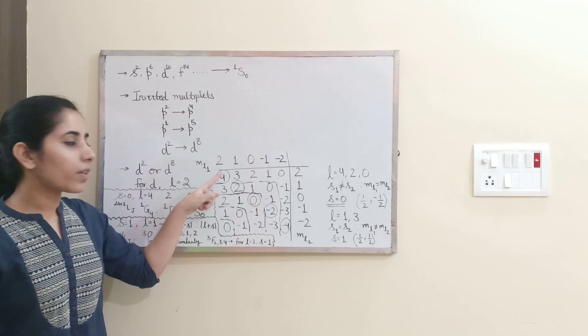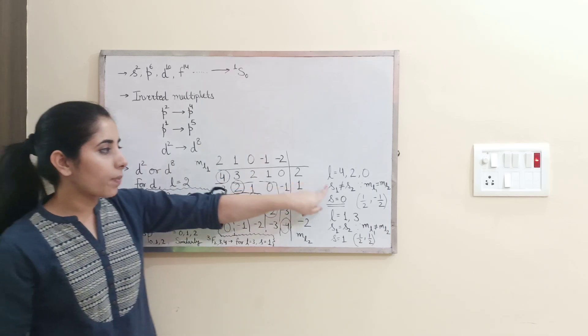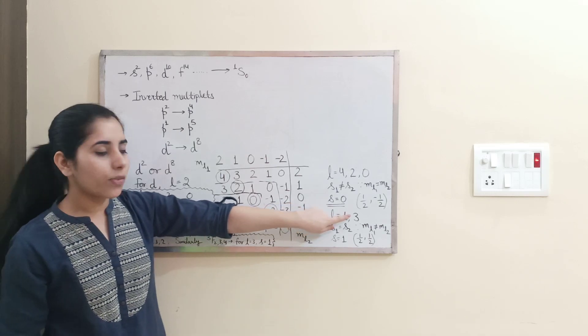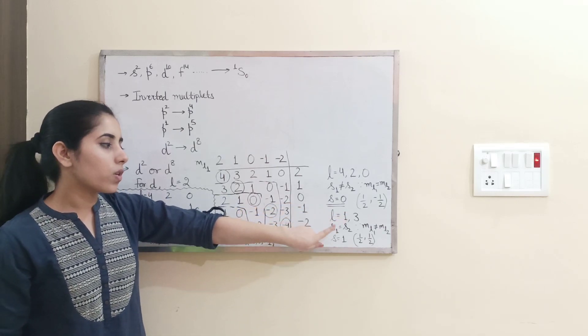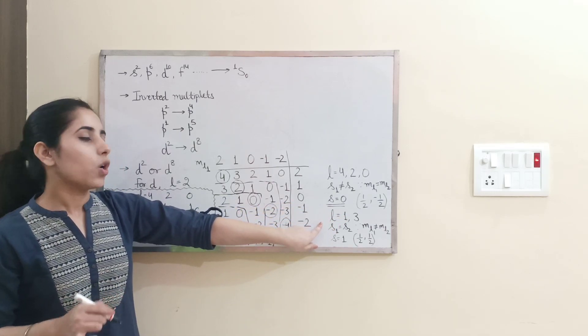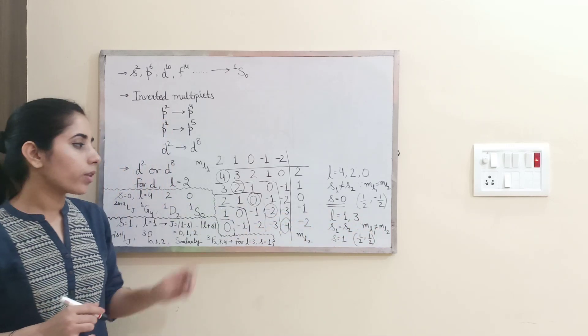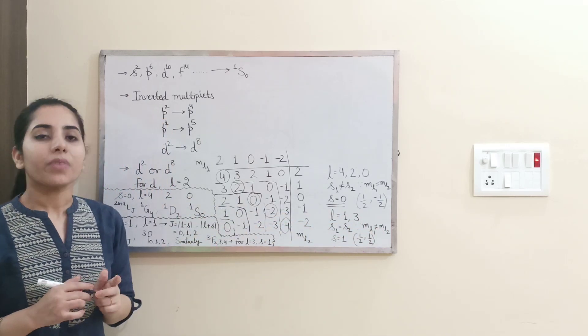So you have already found that for 4, 2, 0, it's going to be spin 0, clear? For remaining ones, that means 1 and 3, spin will be 1 because spin values can be same, okay? But ML1 and ML2 are different for 3 and 1, clear?